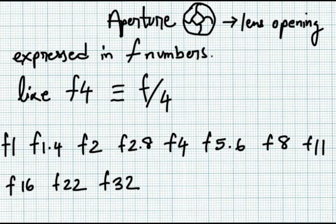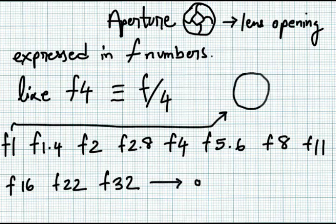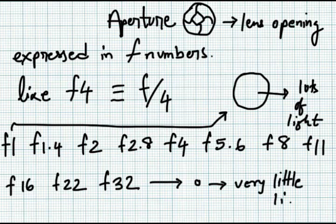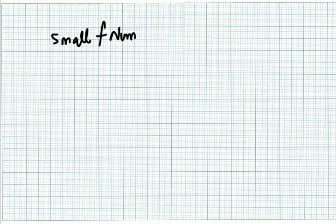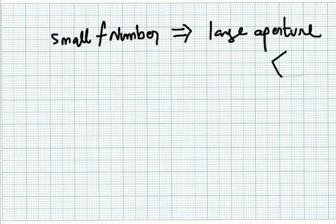Small F number means a large aperture and large F number means a small aperture. So F1 can allow huge amount of light, while F32 will be like a pinhole camera, allowing very little light. So, small F number means large aperture and lots of light. Large F number means small aperture and very little light.